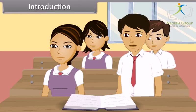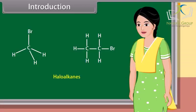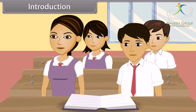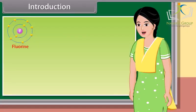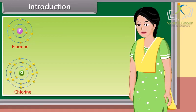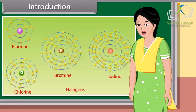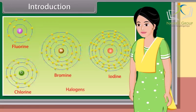Ma'am, what are haloalkanes? Haloalkanes are the chemical compounds in which one or more of the hydrogen atoms in an alkane have been replaced by a halogen atom. And what are halogens, ma'am? Halogens are the reactive non-metals having seven valence electrons.